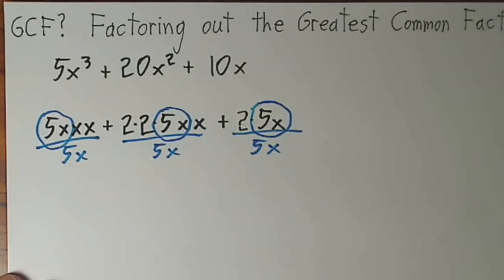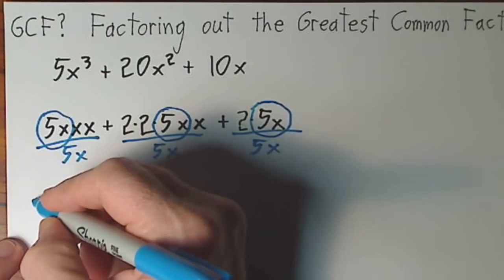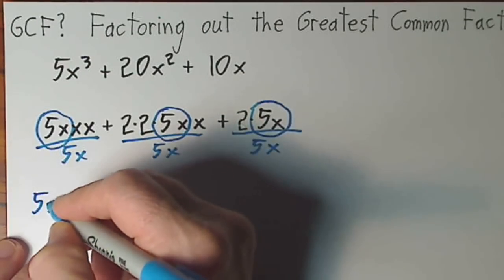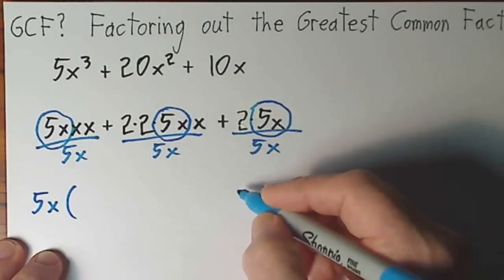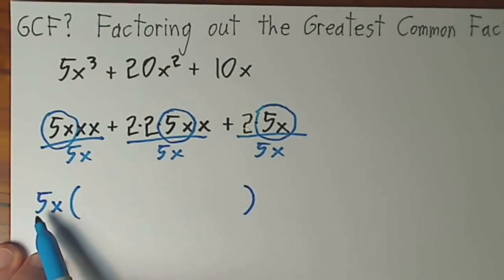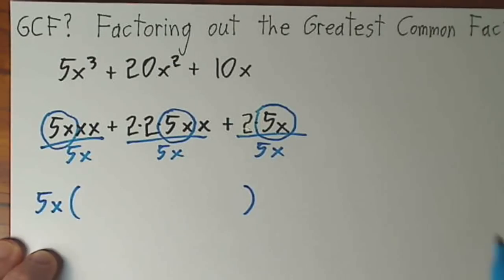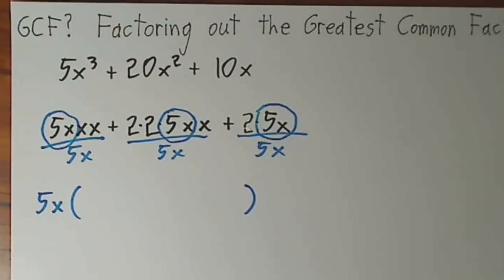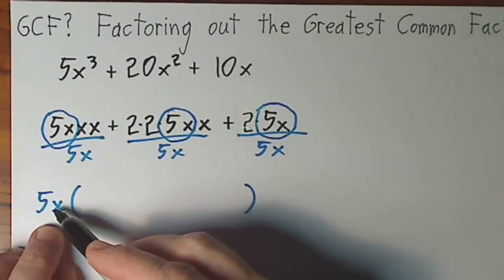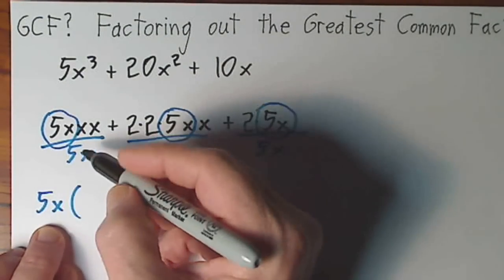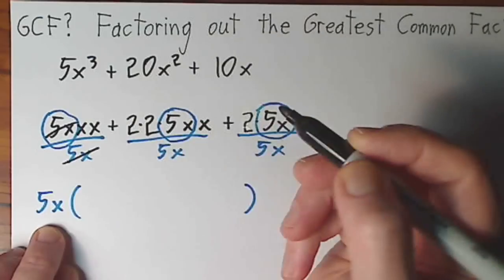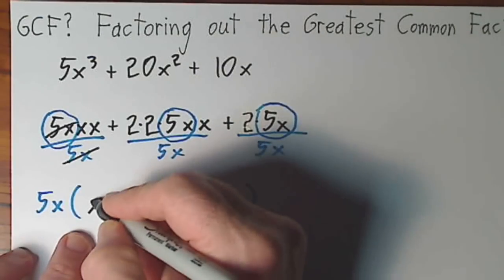So the way I accomplish that is this 5x is going to get divided out of each term. The opposite of division is multiplication. So as long as I indicate that I'm willing to multiply each term by 5x outside parentheses, that says you could send it back in, and that way you would multiply each term by 5x. If I'm willing to multiply each term by 5x, I can divide each term by 5x. So they cancel and you're left with x squared.